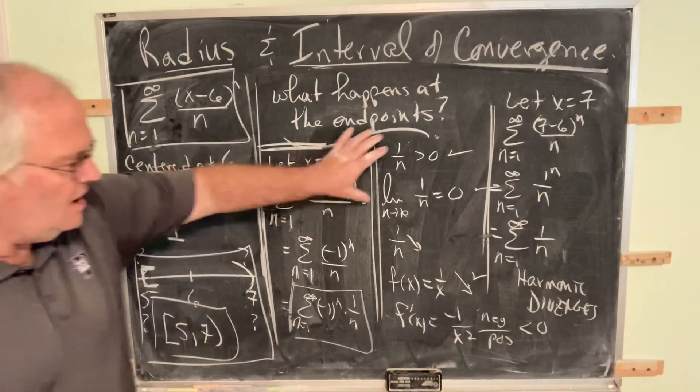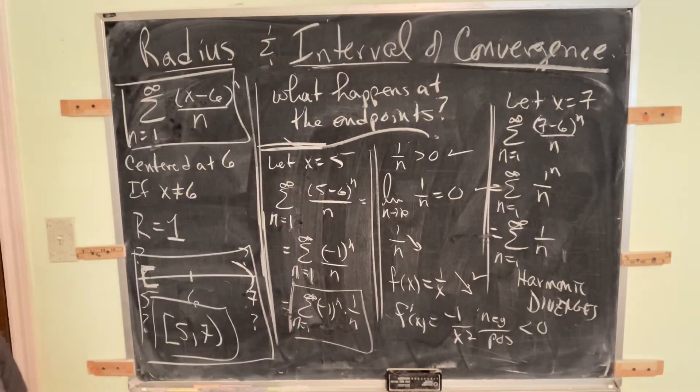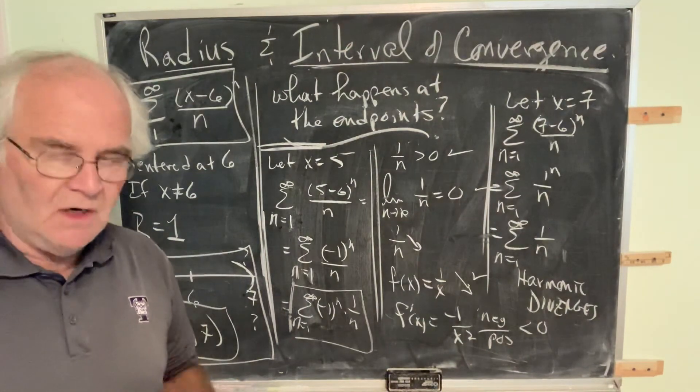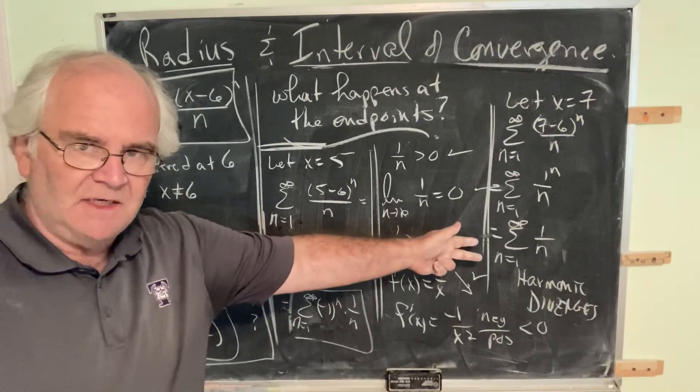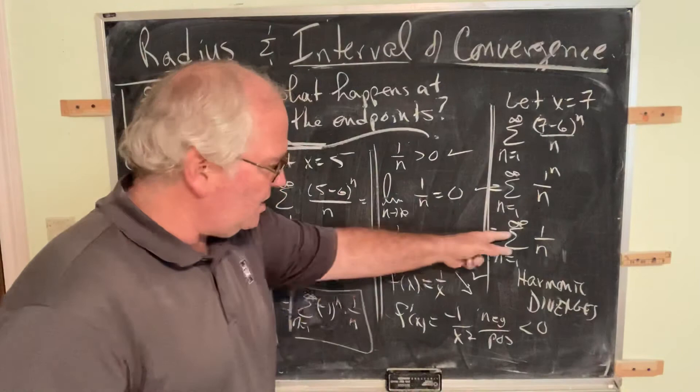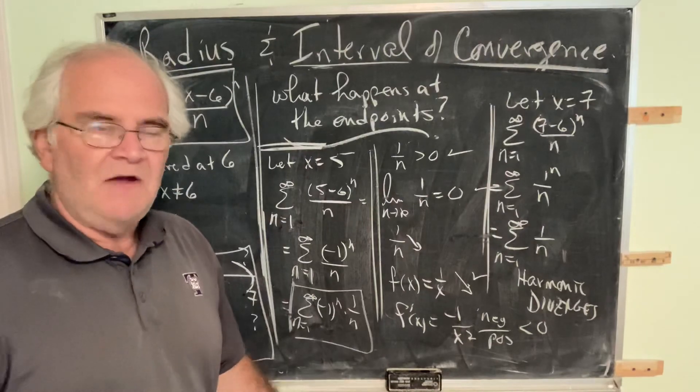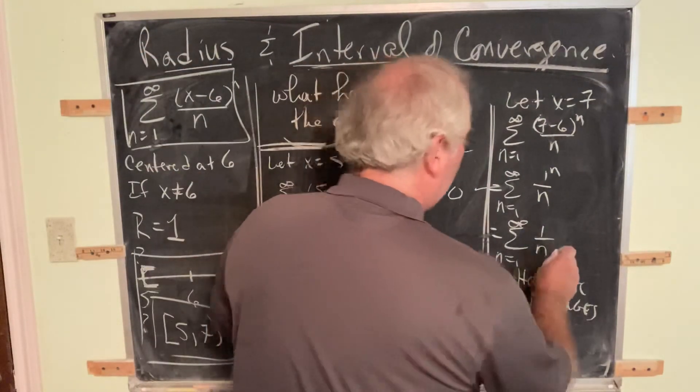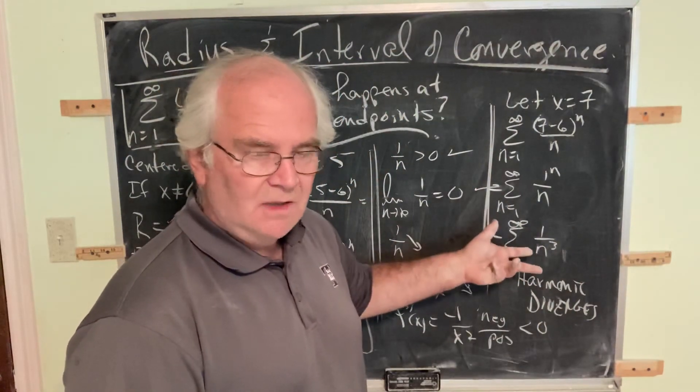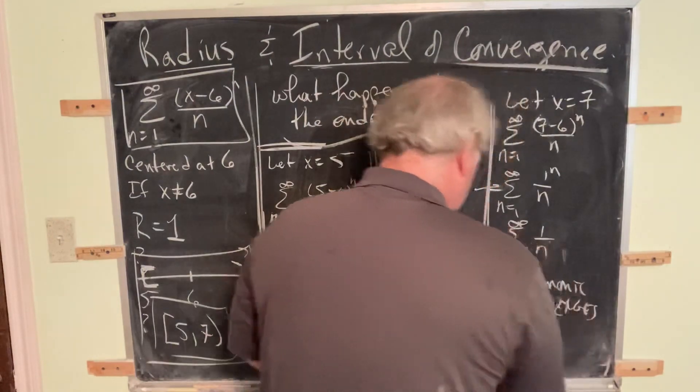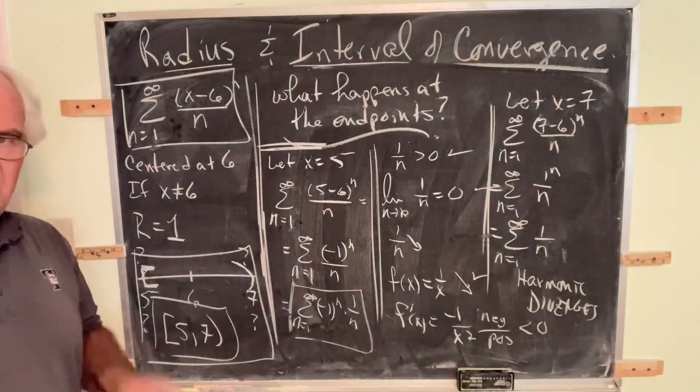At each of the endpoints, substitute individually, and then check to see if that series converges using your knowledge of how series converge. Usually, it'll end up being either an alternating series test or the limit comparison test. Sometimes, if it's very straightforward, you'll get a series you'll be able to recognize. Sometimes you'll substitute and you get a p-series. If you substitute and you get 1/n^3, that's a p-series with p greater than 1 that converges. So whatever you get from substituting that value in, you simplify and determine the convergence of that series based upon your knowledge of how series converge.